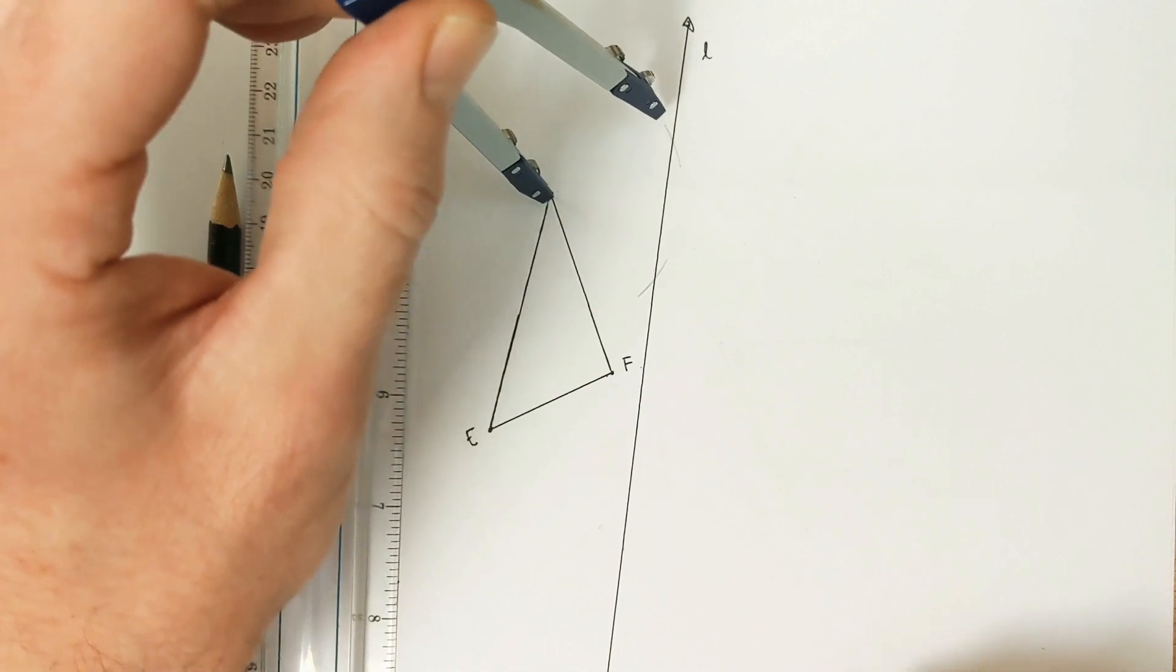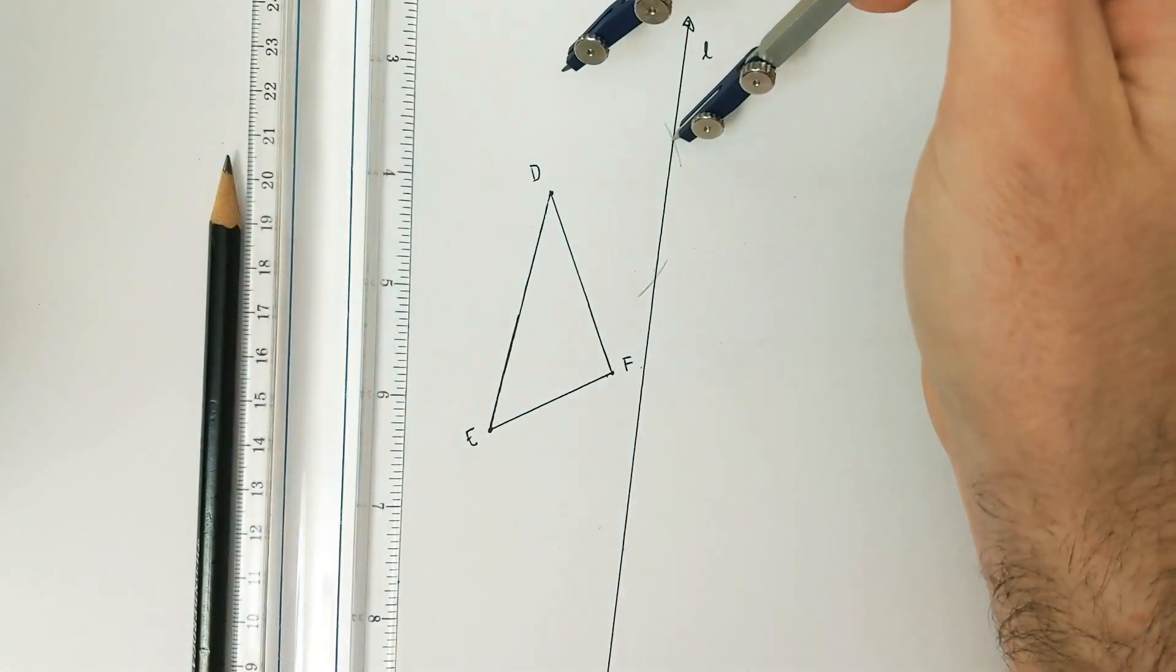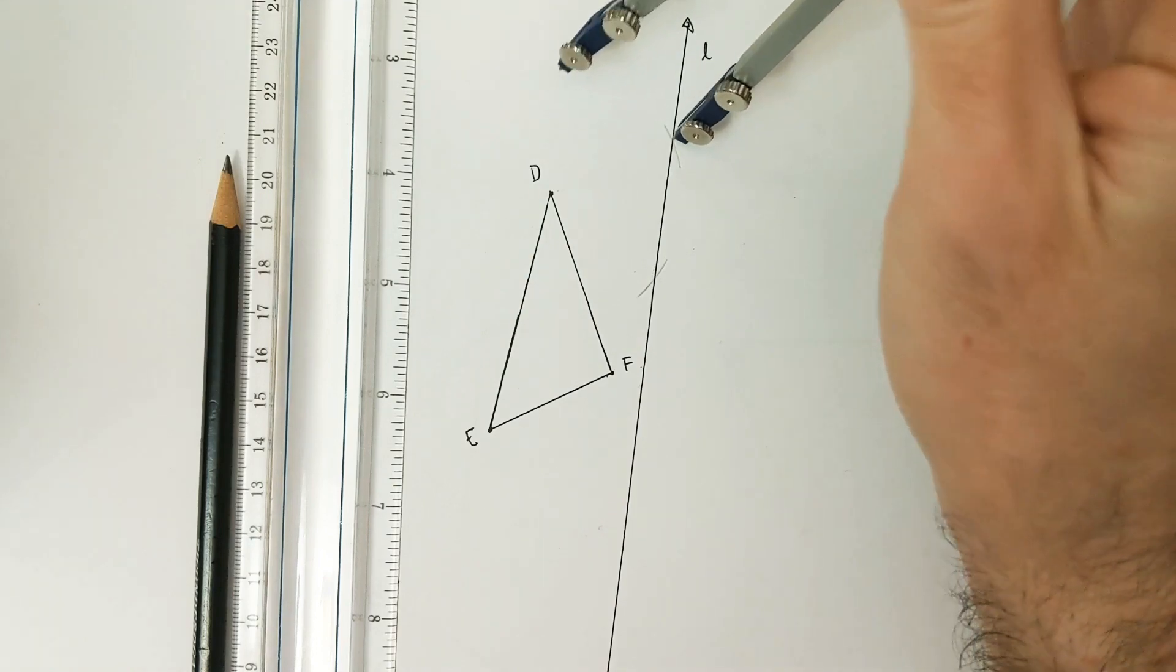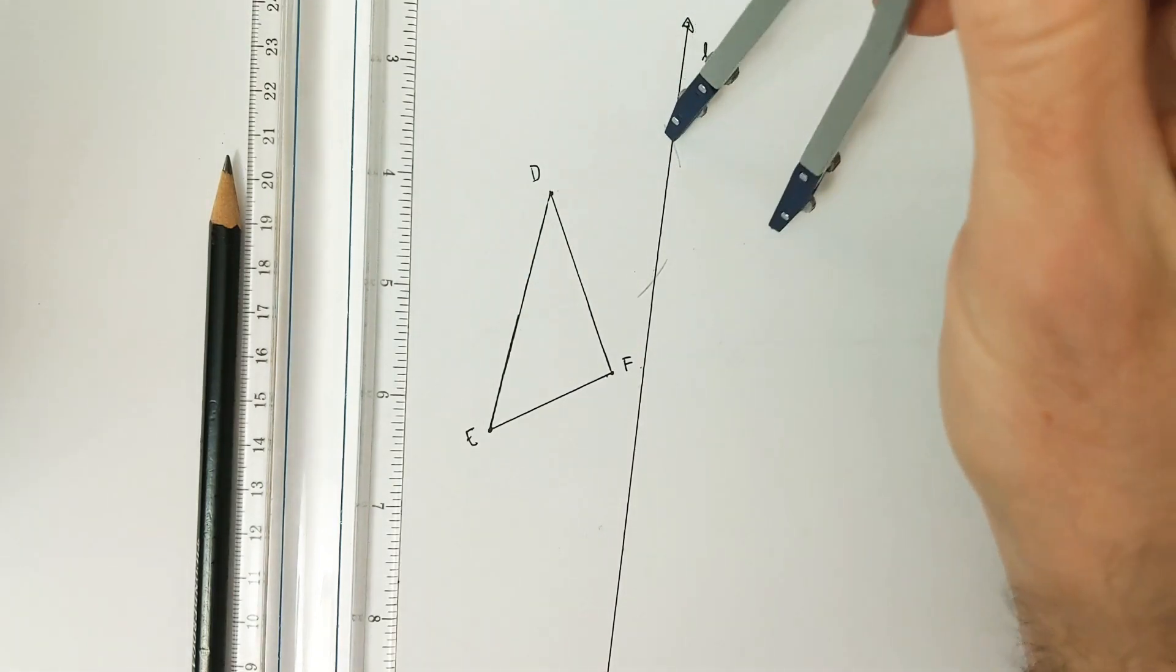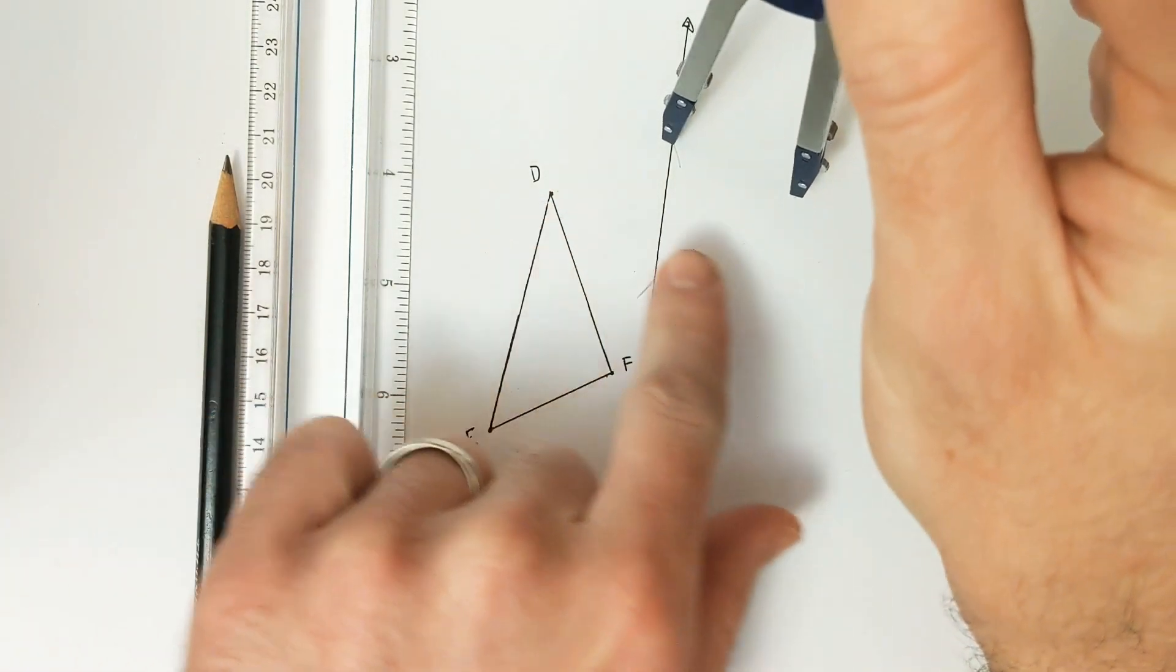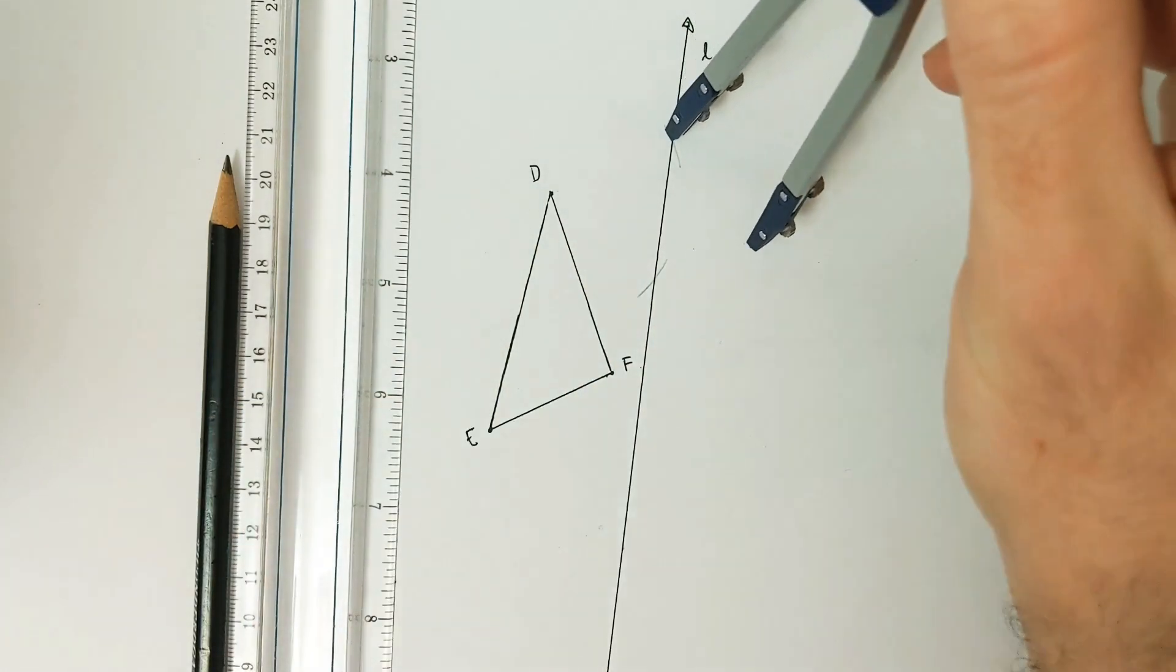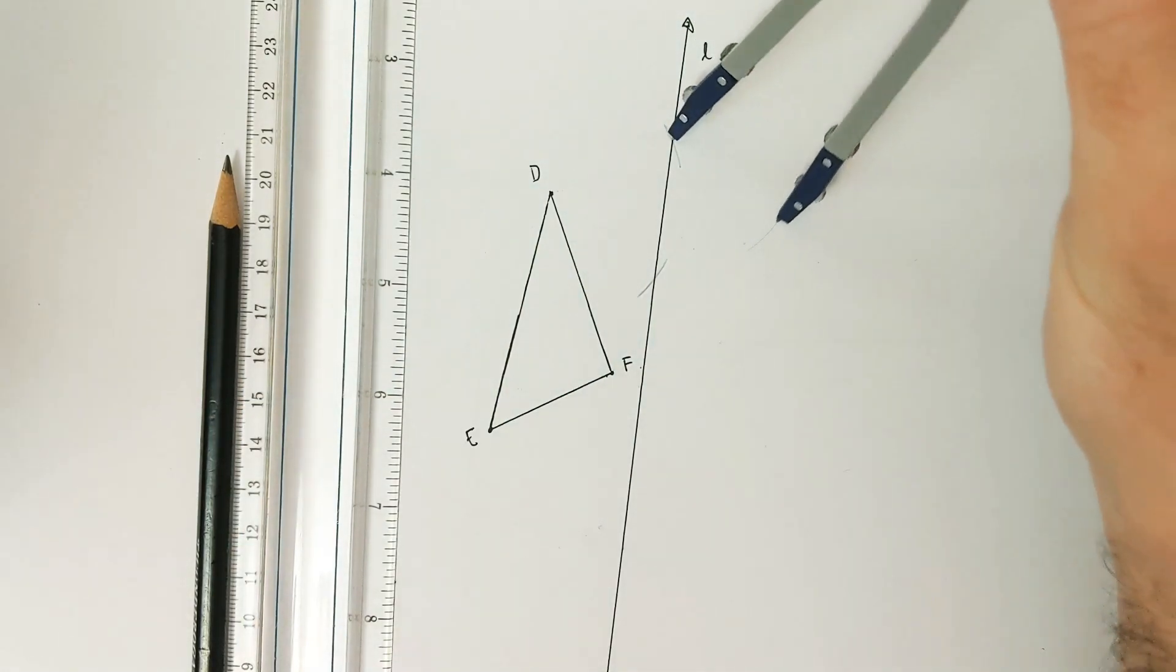So from here, I'm going to take my compass, pick it up, and now draw two arcs from each of those intersection points. And all I really need to draw is enough of the arcs to see where they cross. And I can kind of predict where I think this point is going to end up, just kind of imagining where it might be. So I'm just going to draw a bit of an arc there. And then pick up the compass.